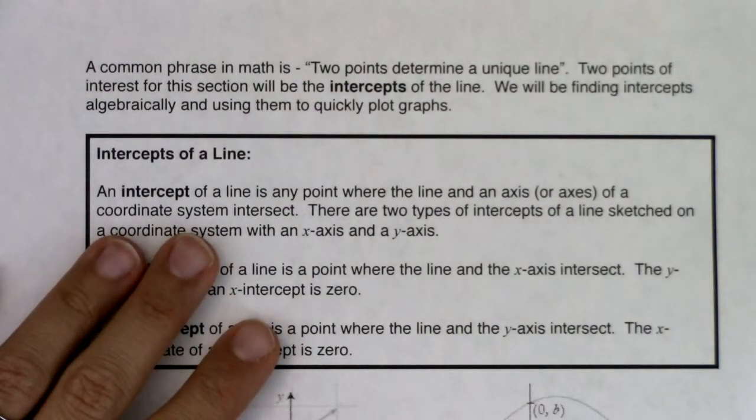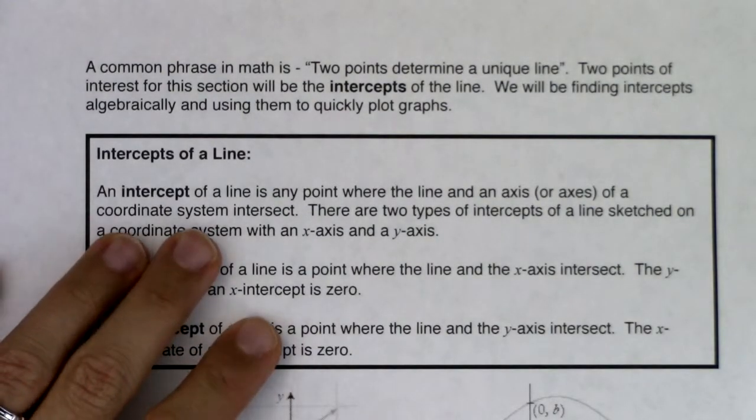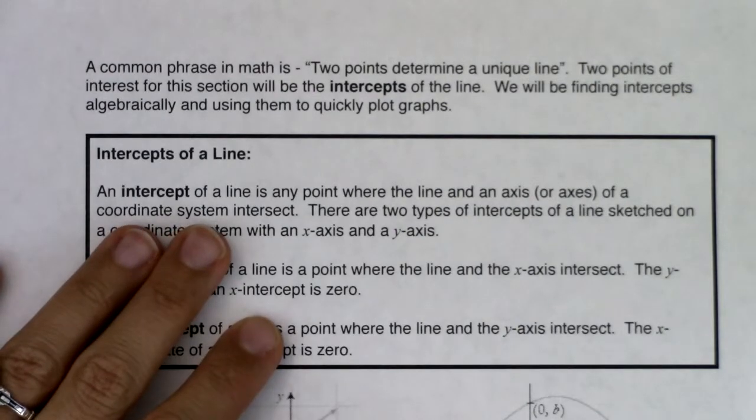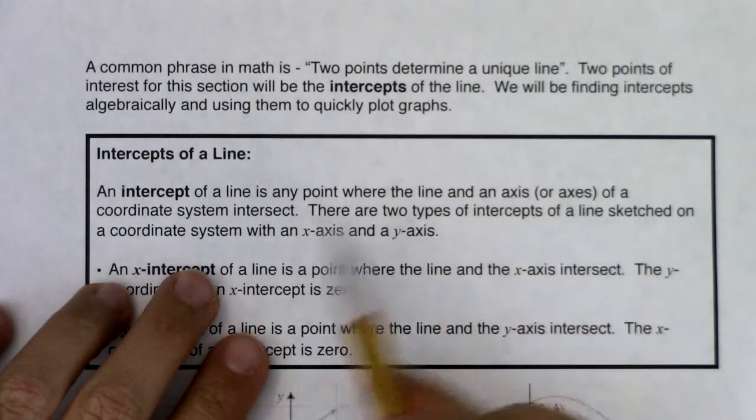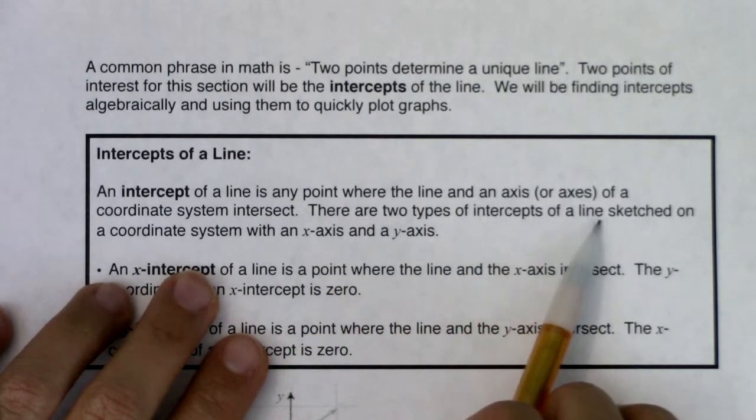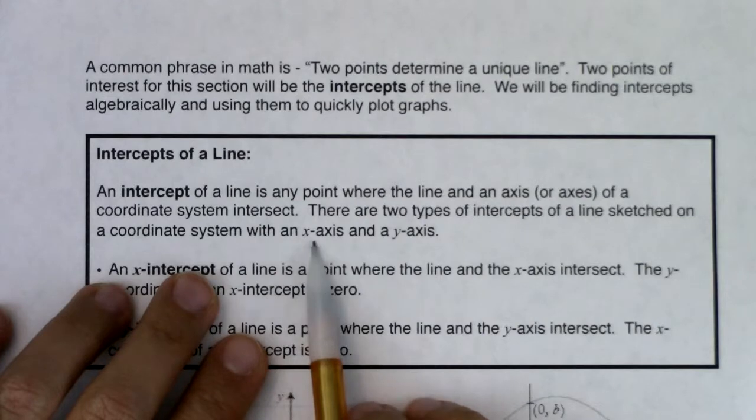So let's just remind ourselves what an intercept is. An intercept of a line is any point where the line and an axis or axes of the coordinate system intersect. There are two types of intercepts of a line sketched on a coordinate system with an x and a y-axis.